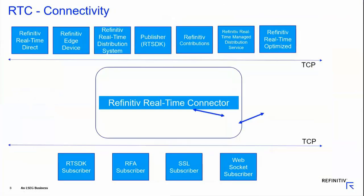From a connectivity point of view, you can connect the RTC to any number of sources you already know — whether the edge device, real-time direct, our cloud offering real-time optimized, or managed solution through RTMDS. You can also do contribution for RTC and have your own in-house publishers based on RTSDK or the SSL API, or connect to an upstream RTDS. Known client applications connect and we do the entitlement via DAX — you run a DAX daemon along with the RTC, so nothing really changes there.